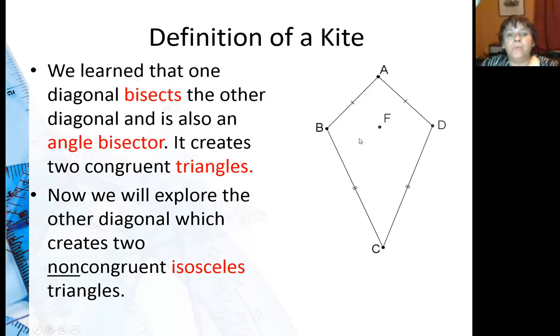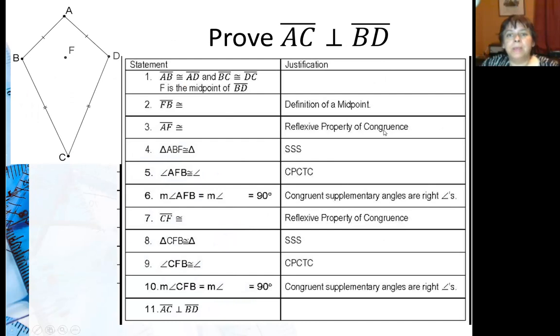So we do know one thing, it doesn't create congruent triangles. It does create two non-congruent isosceles triangles. So we're going to prove that the two diagonals are actually perpendicular to each other.